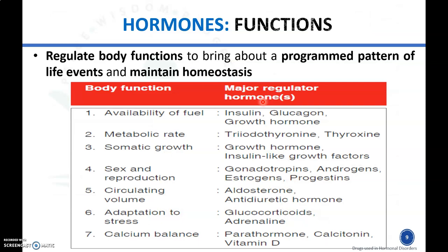The functions of hormones include: first, availability of fuel — glucose balance is maintained by insulin and glucagon, and overall growth is enhanced by growth hormone. Second, metabolic rate — body metabolism is controlled by triiodothyronine and thyroxine, which are thyroid hormones secreted by the thyroid gland. Third, somatic growth is regulated by growth hormone and insulin-like growth factor.